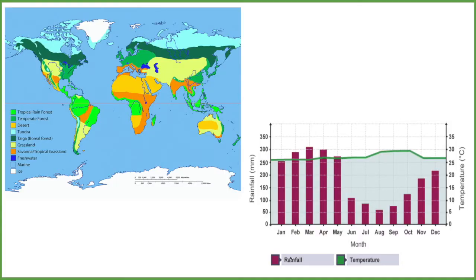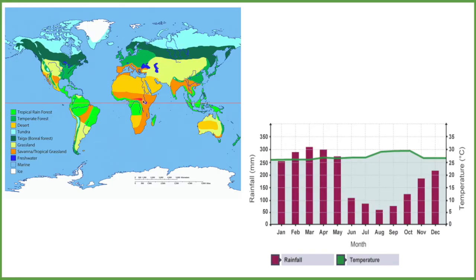The distribution of tropical rainforests, which we discussed briefly in our last lesson, follows the equator. You can see the luminous green colours here are the tropical rainforests. They follow the equator because it has a very warm but also very wet climate, which is what the vegetation needs. To be more strict with the distribution, it's technically 23 degrees north and south of the equator, along the Tropics of Cancer and Capricorn.